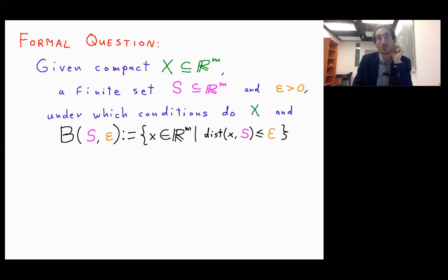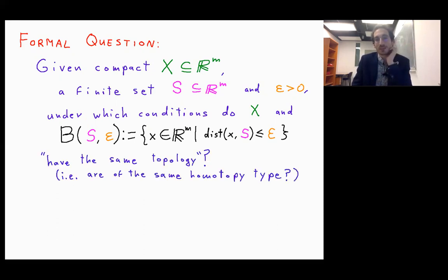So this is the union of the balls of radius epsilon around the points of my sample, so this is essentially the fattening of the points of my sample. So under which conditions do X and B(S,ε) have the same topology? Formally by this we mean that are of the same homotopy type.